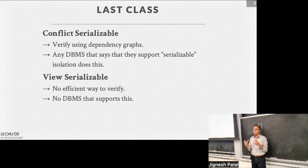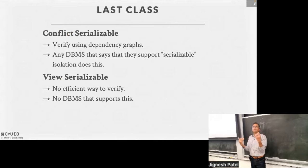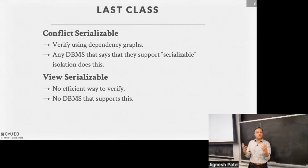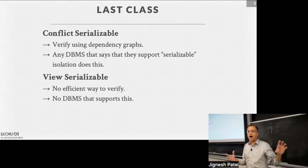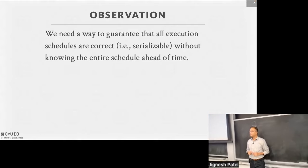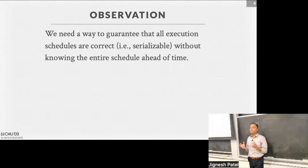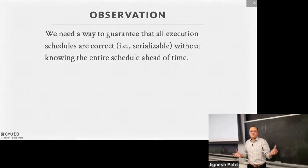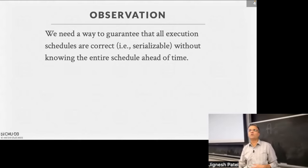We will concern ourselves with this conflict serializable class of schedules that we want to allow. We also talked about view serializable, in which if you knew a little about the application semantics you could allow a few more schedules — but that tends to be very hard to enforce in practice and no one does that. We'll focus on conflict serializable and how to make that work. Last class, we said if you draw the dependence graph and see a cycle, we're in trouble. But how do you draw the cycle? We were drawing it after the schedule was done — is it too late?